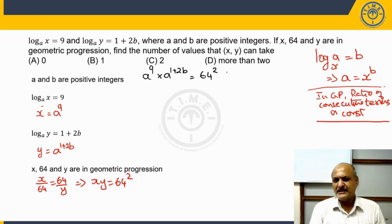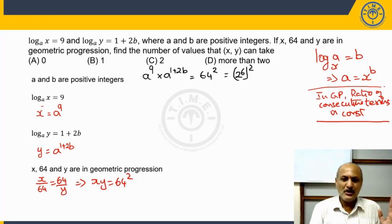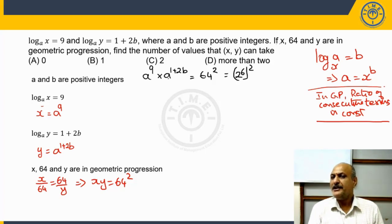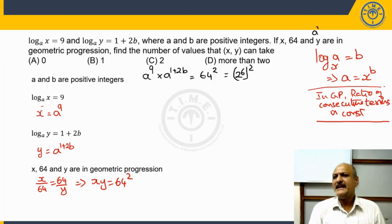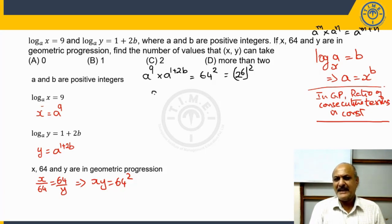Now, 64 is 2 to the power of 6, so 64 squared is 2 to the power of 12. On the left-hand side, using the law of indices — a^m · a^n = a^(m+n) — we get a raised to the power of (10 plus 2b) equals 2 to the power of 12. Since 10 and 2 are both even, 10 plus 2b is an even number.